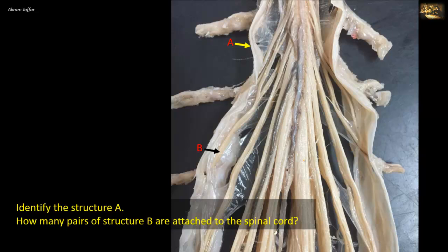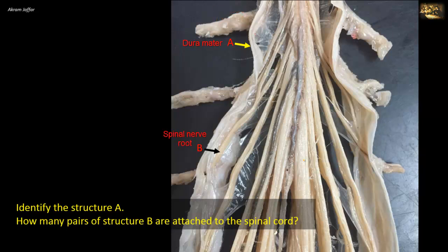Identify structure A. How many pairs of structure B are attached to the spinal cord? This is a dissection of the spinal cord showing the outer thick covering of dura mater as A. The arachnoid is directly applied to its inner surface as a shiny lining. Pia surrounds the cord and its extensions form the thin denticulate ligament. B is a spinal nerve root; there are anterior and posterior roots that unite to form a spinal nerve. Note an anterior spinal artery, a single trunk descending in front of the cord, continuing as a slender twig on the filum terminale.